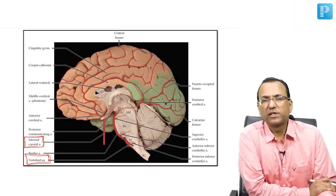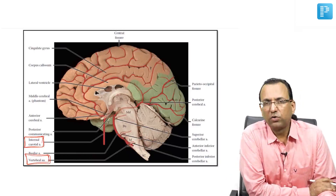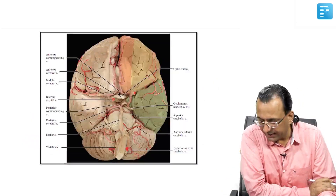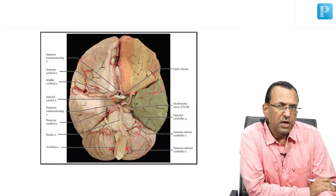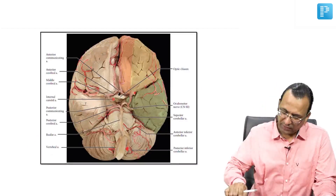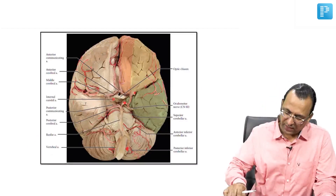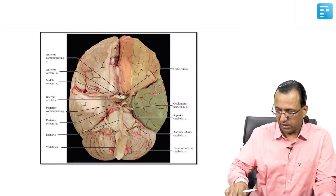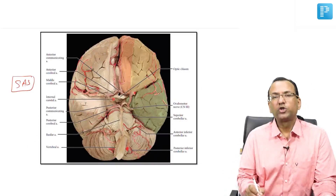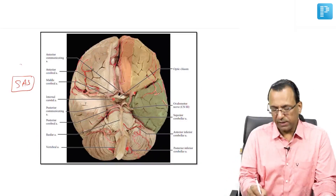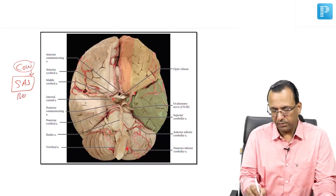At the base of the brain is where we have the Circle of Willis, located in the subarachnoid space. What if you have a berry aneurysm rupture? That is a relevant clinical implication of this anatomy.